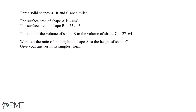Three solid shapes A, B and C are similar. The surface area of shape A is 4cm². The surface area of shape B is 25cm². The ratio of the volume of shape B to the volume of shape C is 27 to 64. Work out the ratio of the height of shape A to the height of shape C. Give your answer in its simplest form.